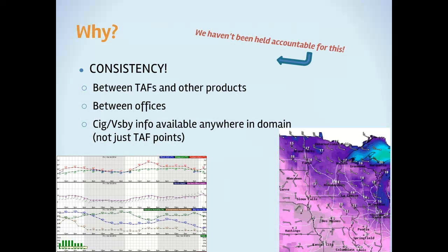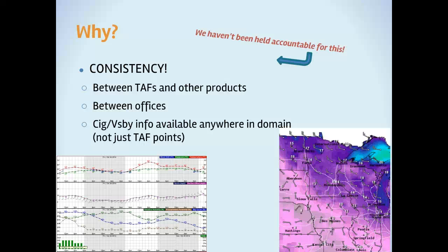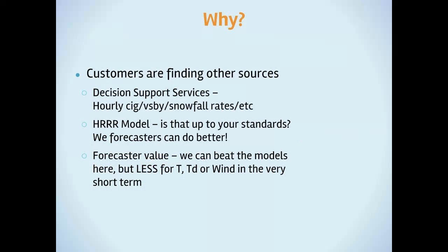What will help in the long run, once everyone's on board — two to five years down the line or more — when all the offices are doing the aviation grids, think of what that can do for our customers on a big picture basis. Even the Aviation Weather Center would be able to use our products even better rather than just clicking around and looking at all of our TAFs. Wouldn't it be nice if they could see one big picture of what we're thinking?